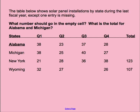Now this next one: the table below shows solar panel installation by state during the last fiscal year, except one entry is missing. Actually, I'm seeing several entries that are missing. It says: what number should go in the empty cell? What is the total for Alabama and Michigan? The first thing you want to figure out is to look at all of this — these cells are all filled in.